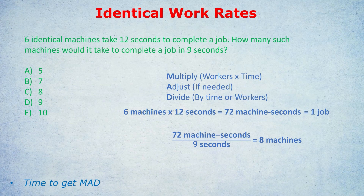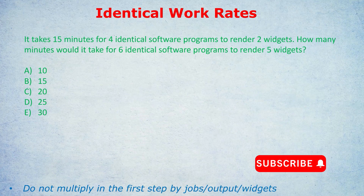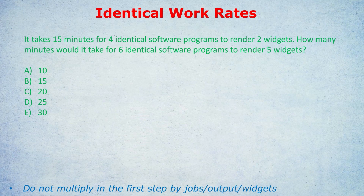Always the same three steps, always in the same order. Now, here's a question where we need to adjust in the middle. Pause and see if you can do it yourself — it's a hard one. In the GRE, we're already approaching a 165+ level question. The question is: it takes 15 minutes for four identical software programs to render two widgets. How many minutes would it take for six identical software programs to render five widgets? I moved things around to throw you off — let's see if you've followed the MAD method carefully.